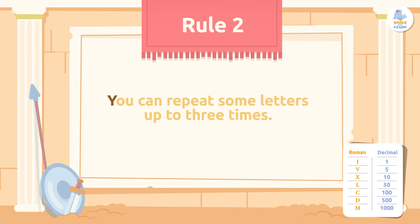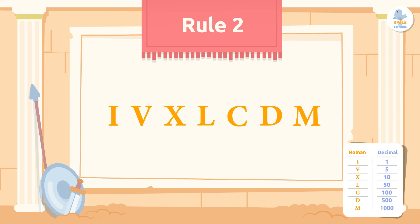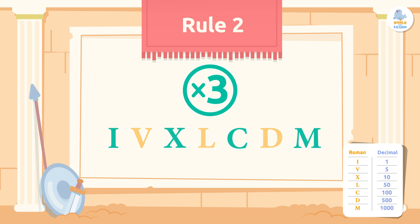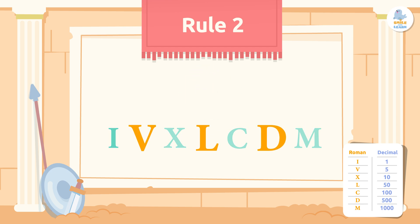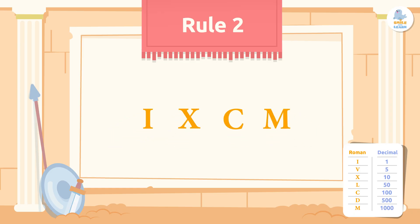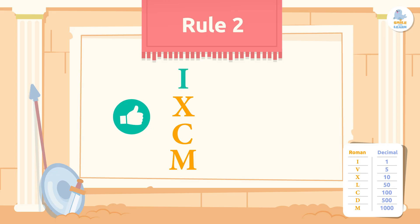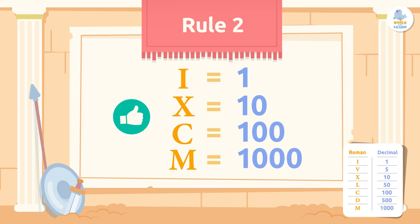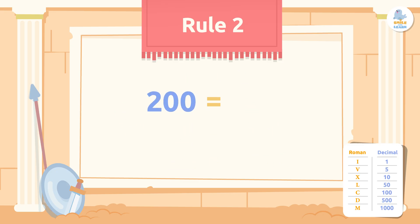Rule number 2: you can repeat some letters up to three times. In the same numeral we can find some letters repeated up to three times, but others cannot be repeated. The letters that can be repeated up to three times are: I (1), X (10), C (100), and M (1000). For example, to write the number 200, we use two C's, since the letter C has a value of 100. If we add both letters together, we get 200.